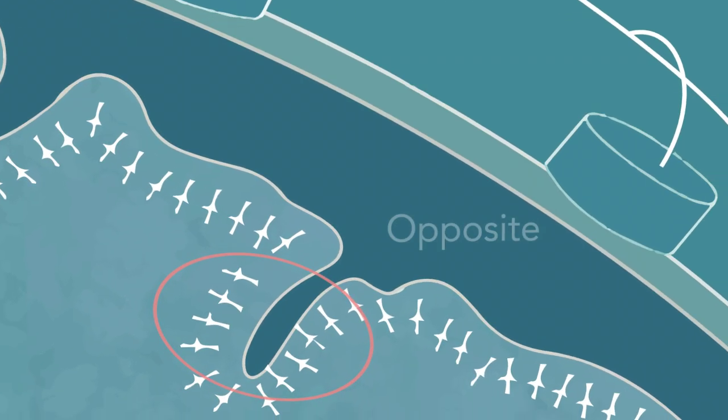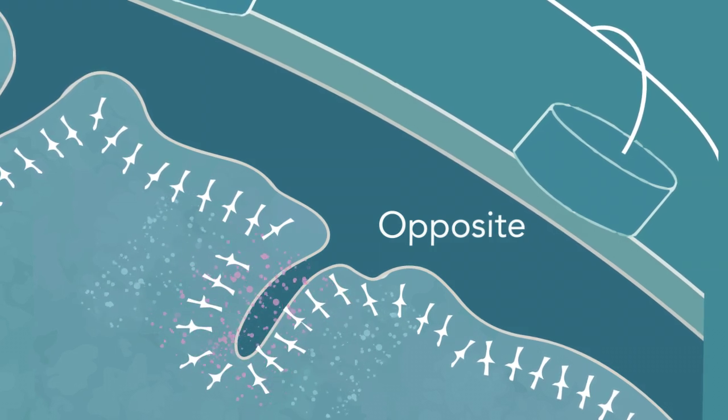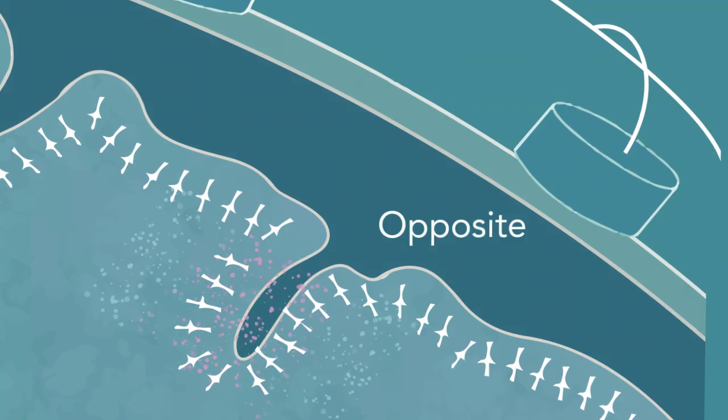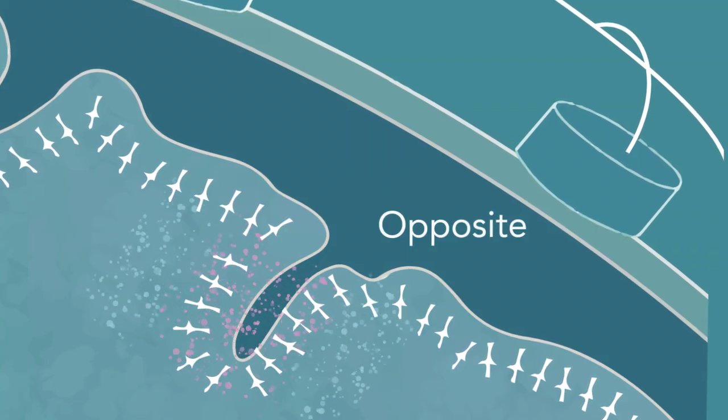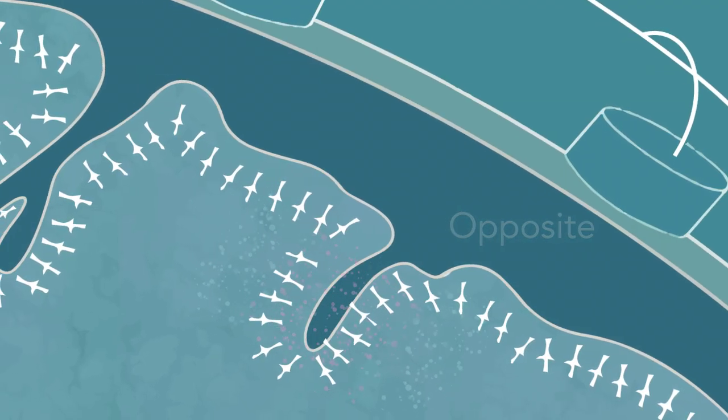When the neurons are in opposite alignment, the positive and negative charges of their respective dipoles neutralize each other. When the neurons are oriented like this, even though they are firing at the same time, EEG sensors will not pick up a signal.